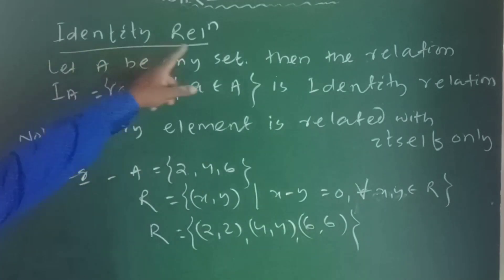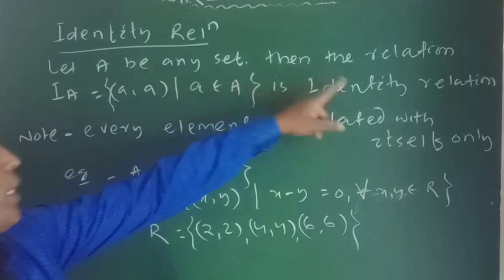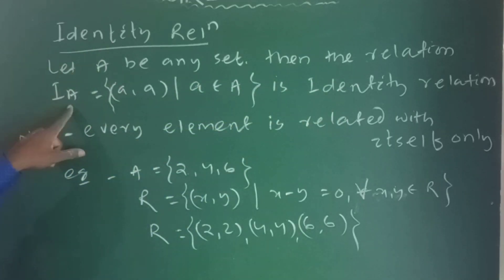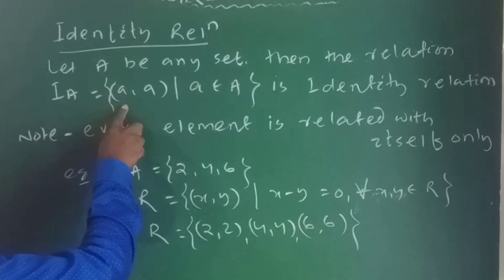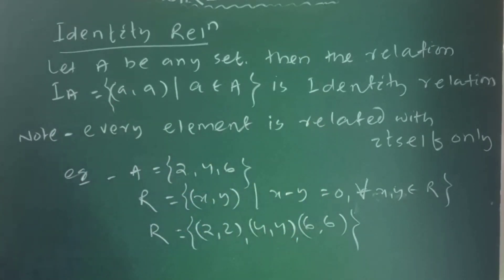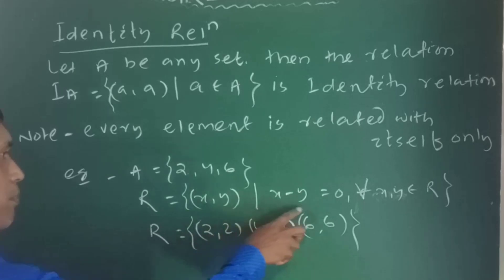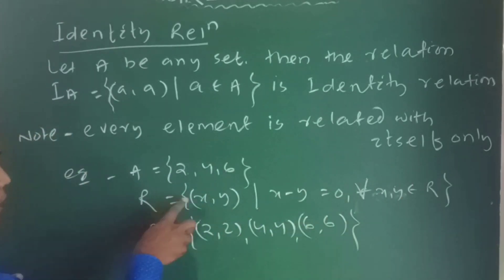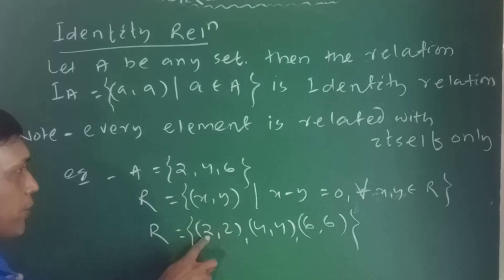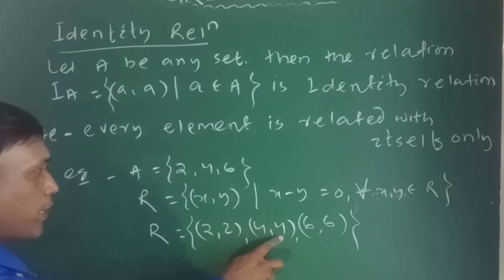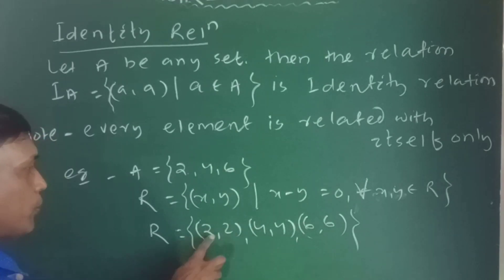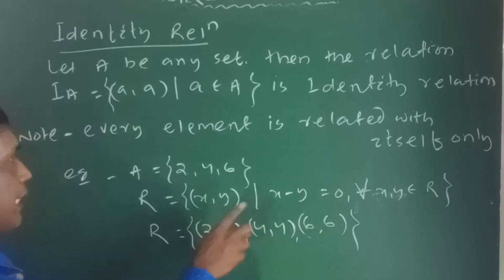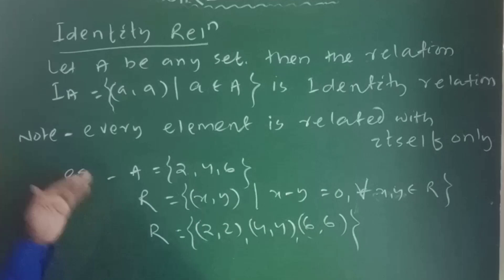Another important relation is the identity relation. Let A be any set. The identity relation I_A is defined as I_A = {(a,a) | a ∈ A} — every element is related with itself. For example, A = {2,4,6}. R = {(x,y) | x − y = 0, x,y ∈ A}. Then: 2−2=0, 4−4=0, 6−6=0. So R = {(2,2),(4,4),(6,6)}. Every element has a relation with itself — this is the identity relation.